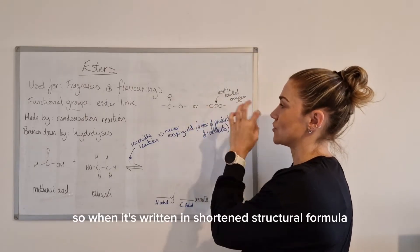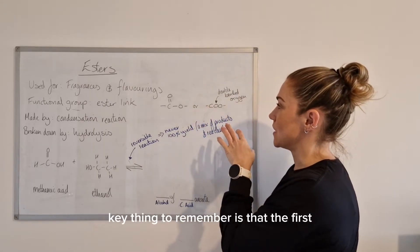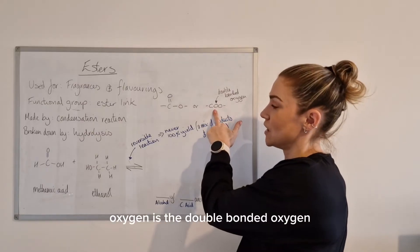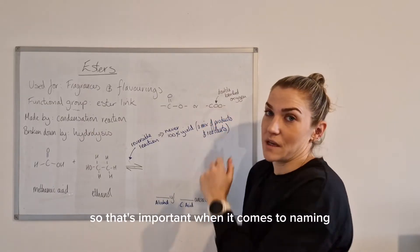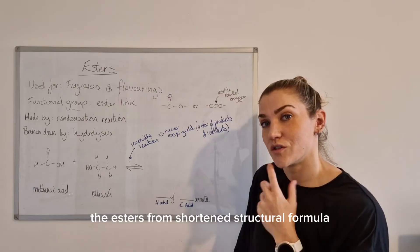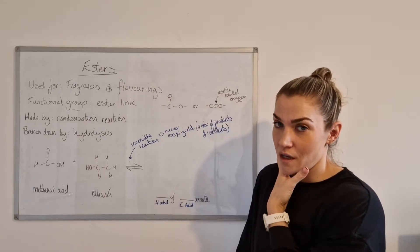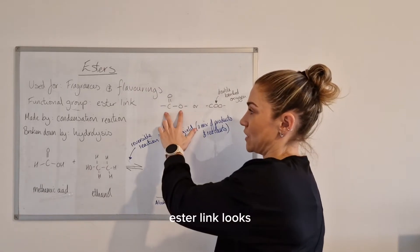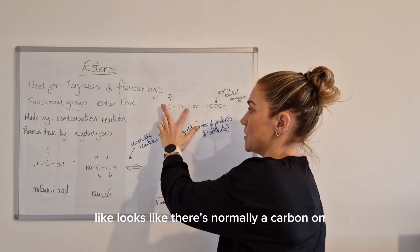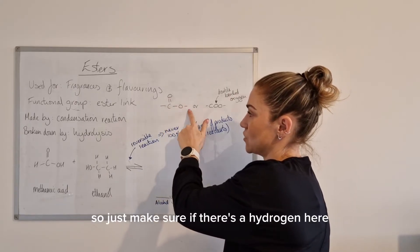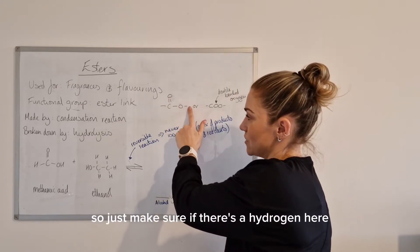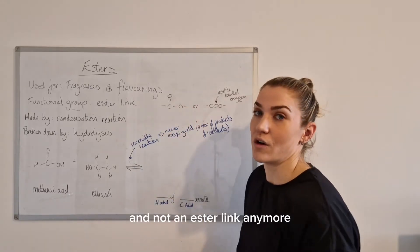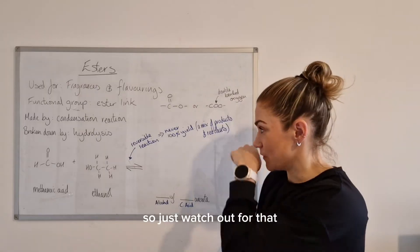When it's written in a shortened structural formula, a key thing to remember is that the first oxygen is the double bonded oxygen. That's important when it comes to naming esters from a shortened structural formula. Also, if there's a hydrogen on that carbon, then that's actually a carboxyl group and not an ester link anymore, so just watch out for that.